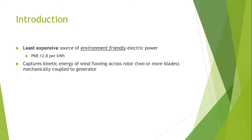Windmills capture kinetic energy of the wind that is flowing across the rotor. The rotor might consist of two or more blades — it can be three, four, or multiple blades — which are mechanically coupled to a generator. When the wind flows, the rotors move and their movement is eventually translated into electricity.